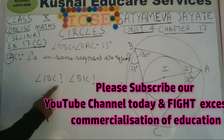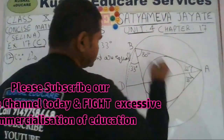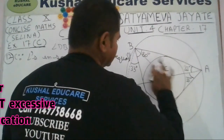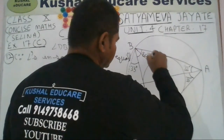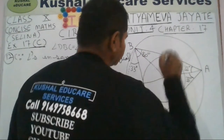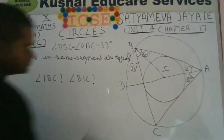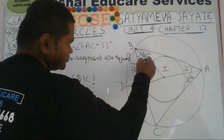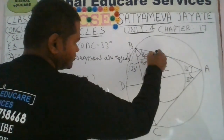Now we have to calculate angle IBC. In order to calculate angle IBC, first we should join points I and B. The basic property of the incenter is that the line segment joining the vertex with the incenter will be the angle bisector. So here BI will be the angle bisector of the interior angle at B. That means angle IBC will equal 40 degrees and angle IBA will also be 40 degrees.